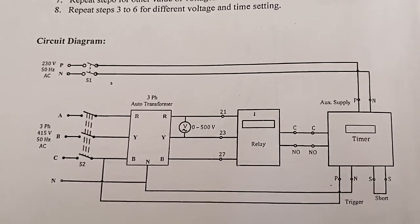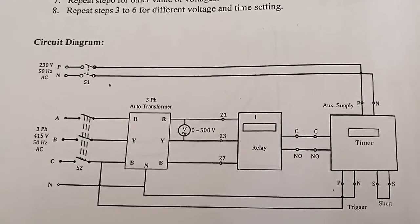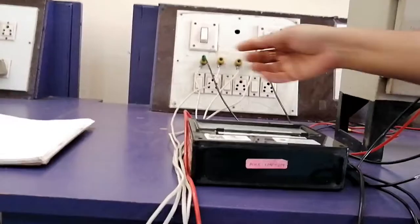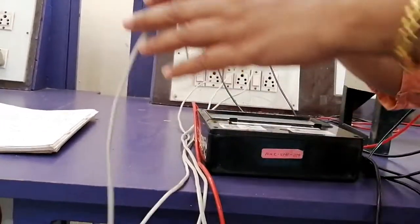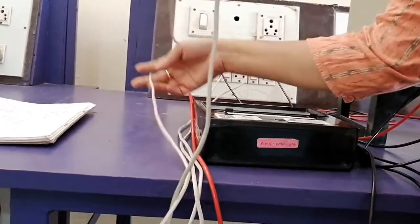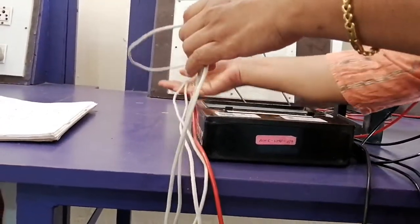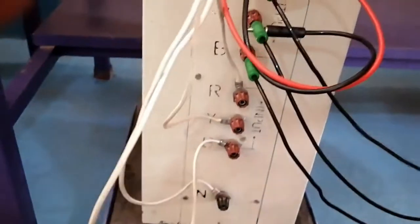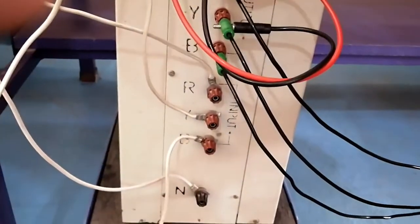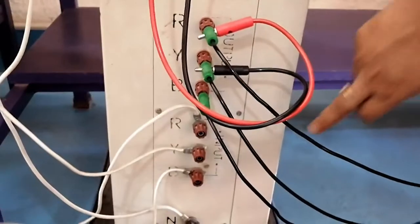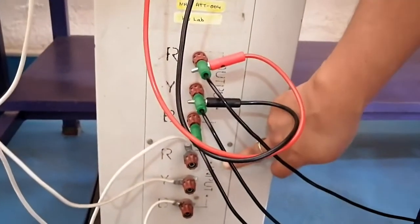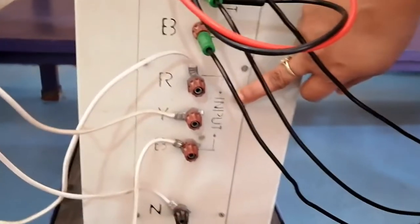Now let us go to the connection part of this experiment. You can see S2 switch which has 3 phases. The white color wires indicate all 3 phases — R connected to R, Y connected to Y, B connected to B. All 3 phases of the supply are connected to the input of the auto transformer.